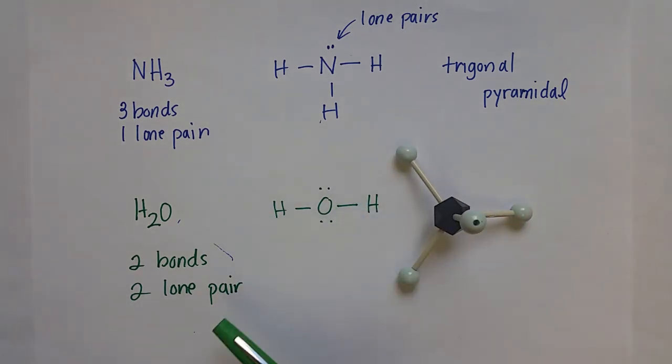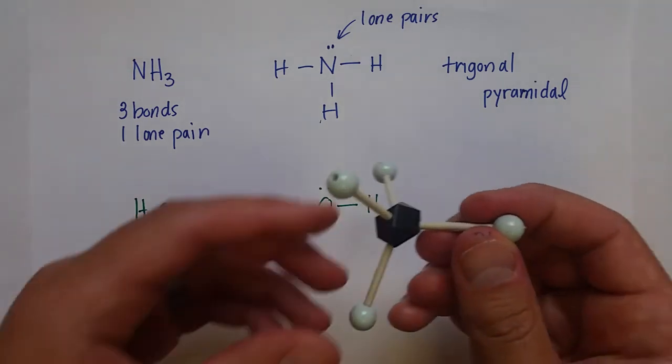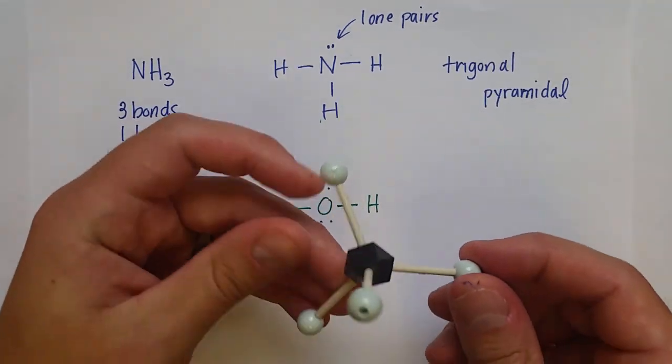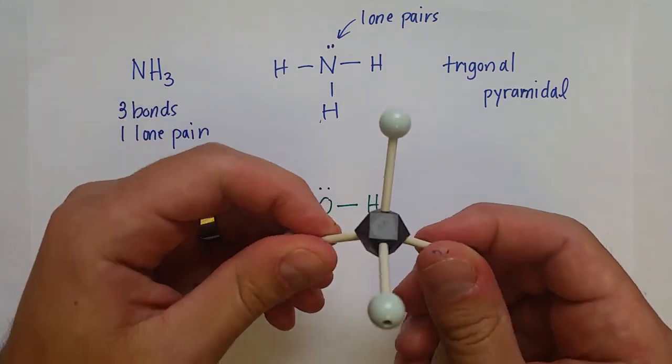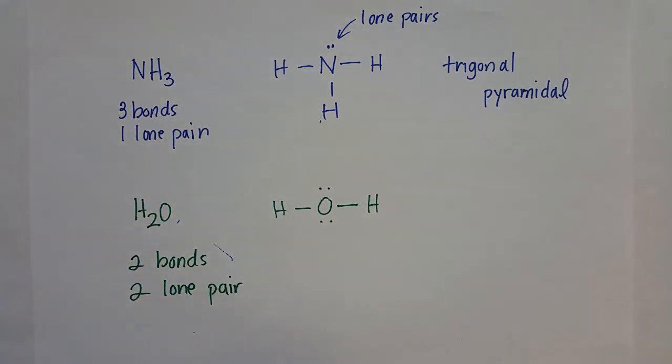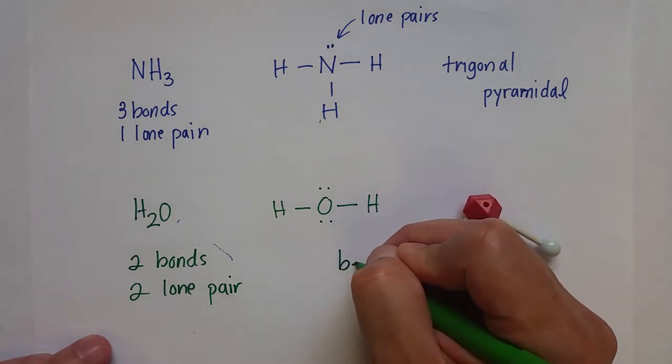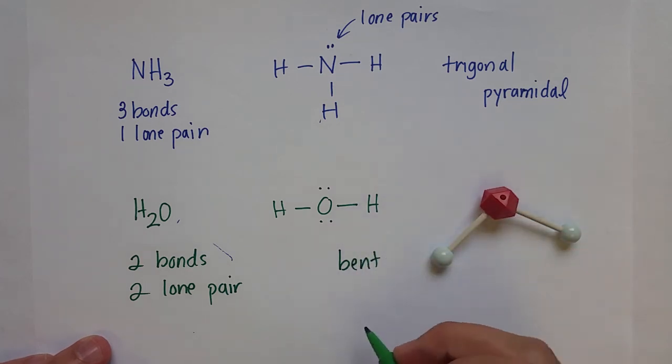But when we think about just where the two atoms are at, we take away two electron groups and use them as the lone pairs, what happens is that the molecule takes on a bent shape. And this is very important.